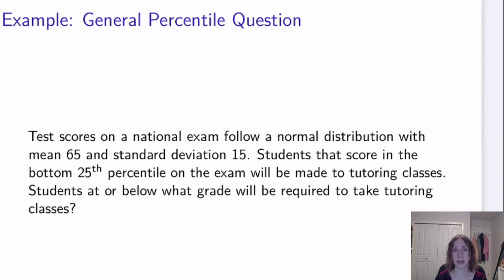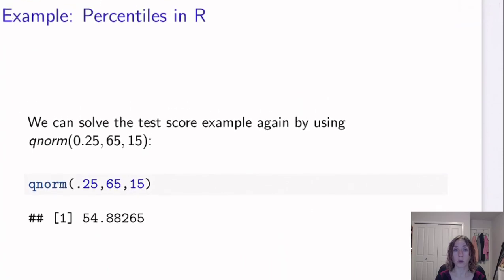So we have this question here that we did. Test scores on a national exam follow a normal distribution with mean 65 and standard deviation 15. Students that score in the bottom 25th percentile on the exam will be made to take tutoring classes. Students at or below what grade will be required to take tutoring classes? So if we're in the bottom 25th percentile, that means there's probability 25% to the left. And we know the people at that grade will get tutoring classes. So it's saying, what is the x value where we have 25% to the left in the distribution where we have mean 65 and standard deviation 15? Well, what we can do is we can use the qnorm function because this is a backwards probability. So qnorm, I give my area to the left 0.25. We give our mean 65, and we give our standard deviation 15. So I type that into R. That is what we have in that gray box. And then after the double pound sign, that would be the output from R.